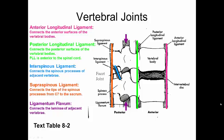Let's look at vertebral joints. This is a sagittal view of two vertebra — vertebral bodies, intervertebral disc, inferior vertebral body, and the intervertebral foramen here.